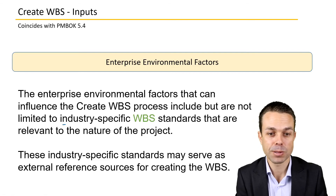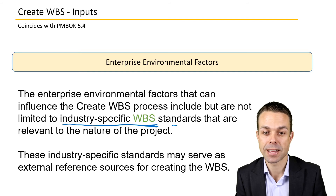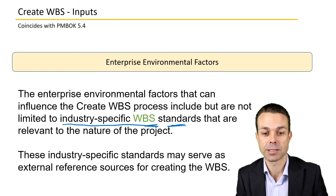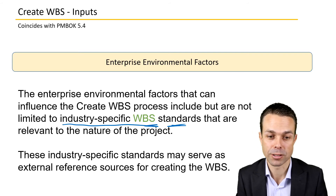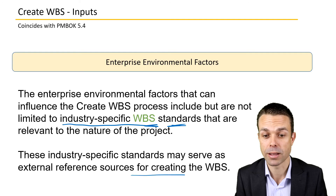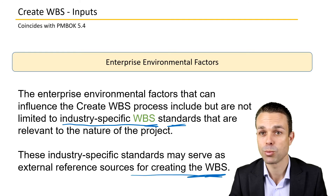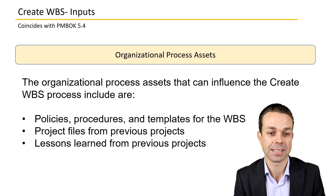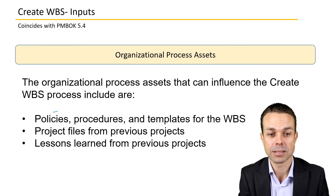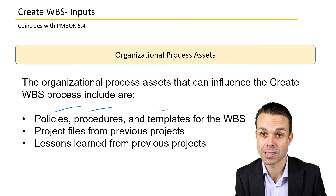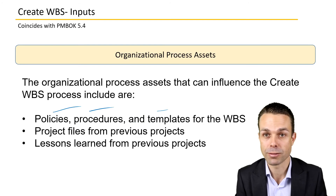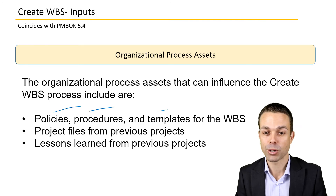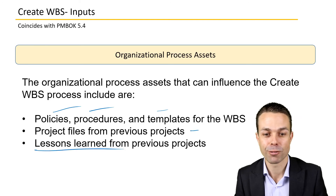Enterprise environmental factors may include industry-specific Work Breakdown Structure standards or standards within your organization. These may serve as an external reference for creating the WBS — more of a how-to guide covering any standards we need to follow. Organizational process assets and templates might include policies, procedures, and templates existing within the organization, project files from previous projects, and lessons learned from previous projects that you can use to help break down the structure.